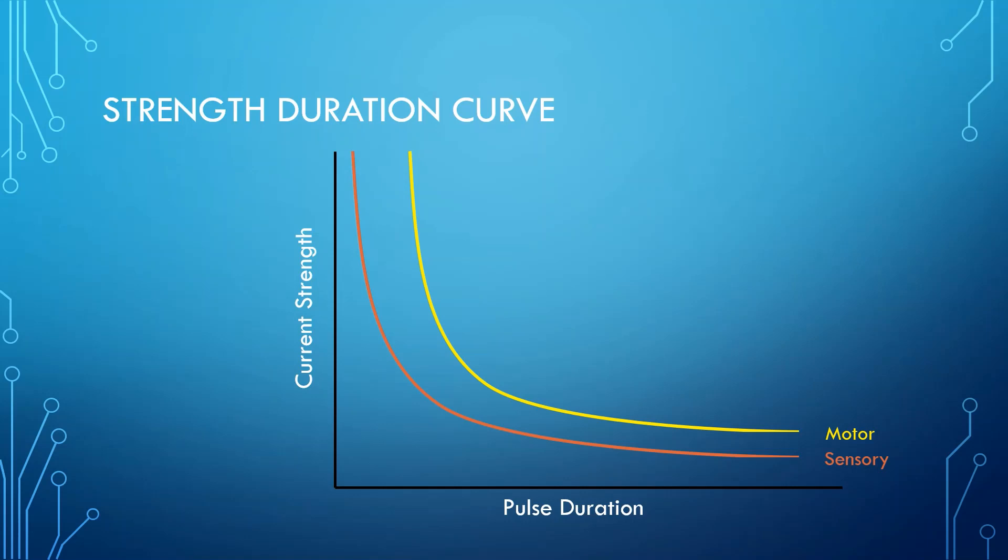The two curves indicate what combination of a particular current strength and pulse duration is required for that type of nerve to depolarize and be activated. Anything below the sensory curve, any combination of current strength and pulse duration, is not going to depolarize any nerves. The client won't feel anything, and they'll have no motor response, even though you are delivering some electrical current.